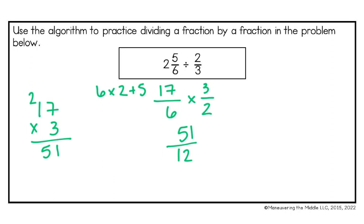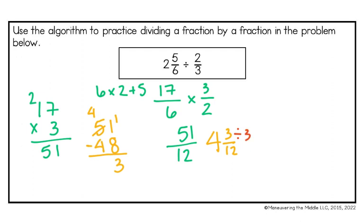Now I need to simplify 51 over 12. 12 goes into 51 four times, because 4 times 12 is 48. 51 minus 48 is 3 left over, giving me 4 and 3 twelfths. I can divide top and bottom by 3, so my final answer is 4 and 1 fourth.